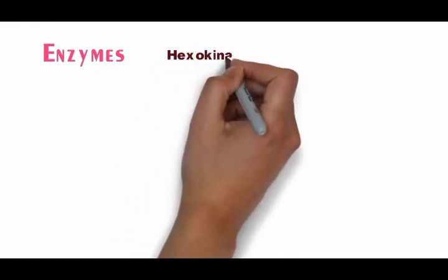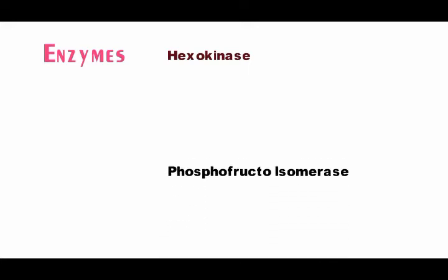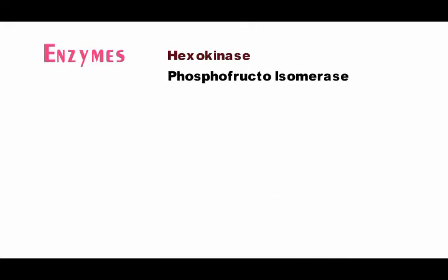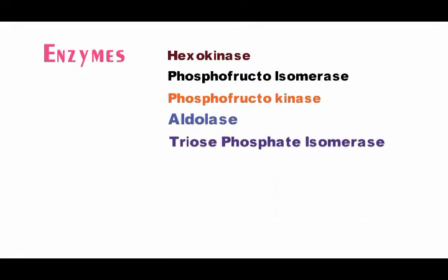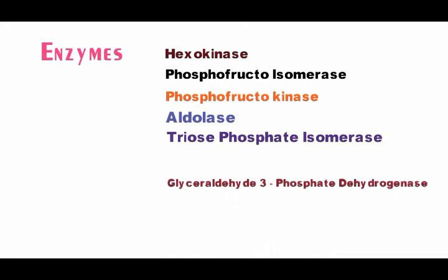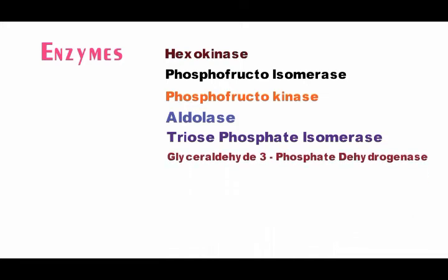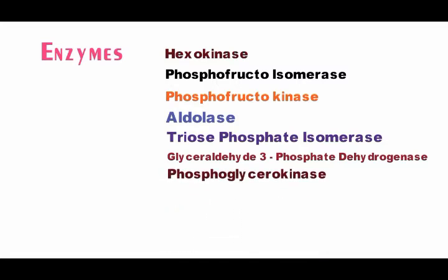Connecting the first letters to the enzymes: H — Hexokinase, P — Phosphoglucose isomerase, P — Phosphofructokinase, T — Aldolase, T — Triose phosphate isomerase, G — Glyceraldehyde-3-phosphate dehydrogenase, P — Phosphoglycerate kinase, P — Phosphoglycerate mutase, E — Enolase, P — Pyruvate kinase.